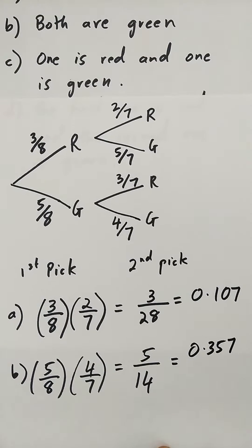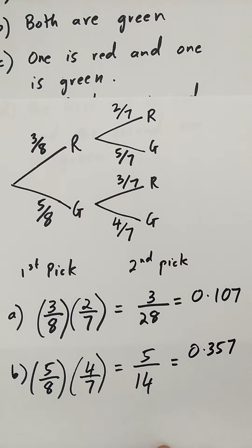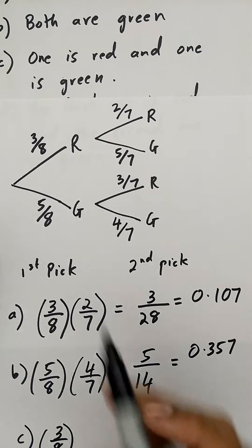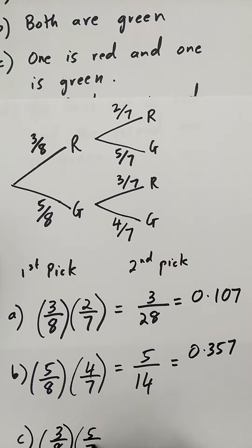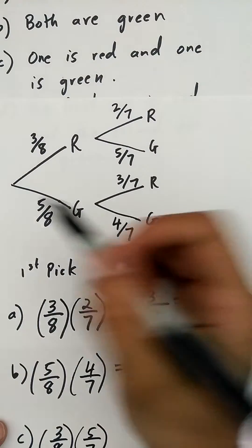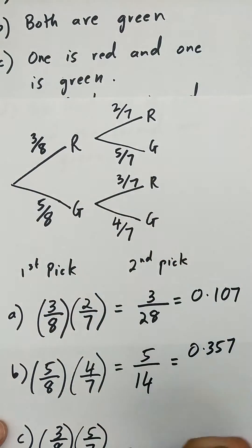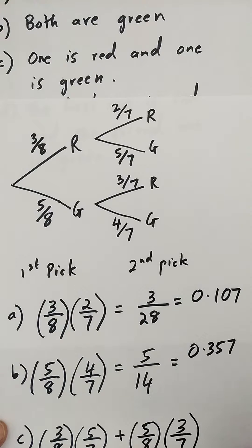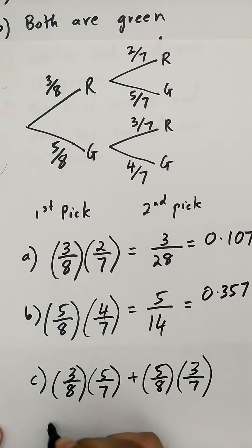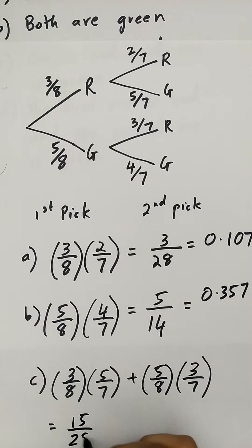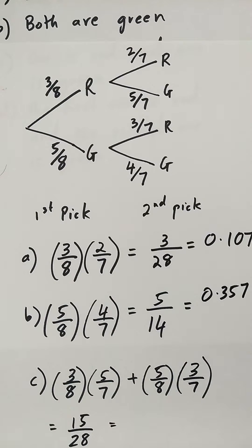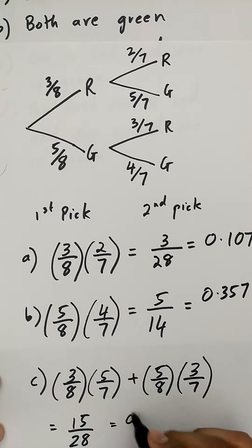For Part C, what is the probability that one is red and one is green? If I pick red first, the probability is three out of eight times five over seven. But I also have another possibility of picking green first and red second, so I add five over eight times three over seven. That gives fifteen over twenty-eight, which equals approximately 0.536.